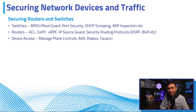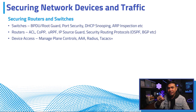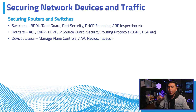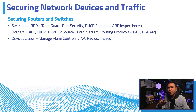For routers, you can also enable various security protections, such as ACL for filtering, IP source guard for IP spoofing, and control plane policy to protect a device's route processor. You can also enable security for routing protocols such as OSPF and BGP.